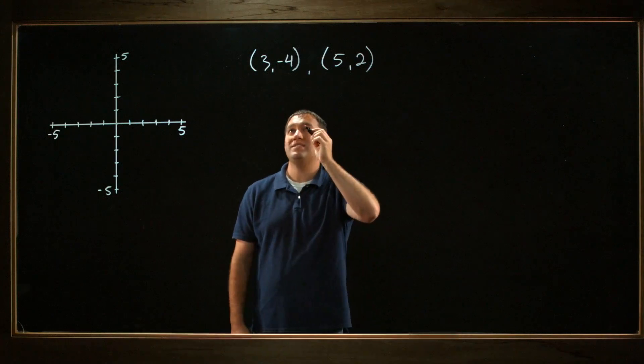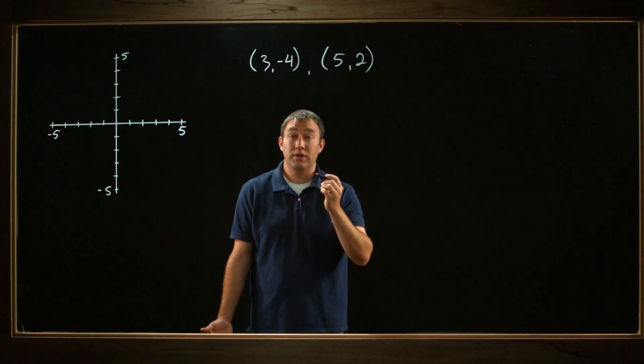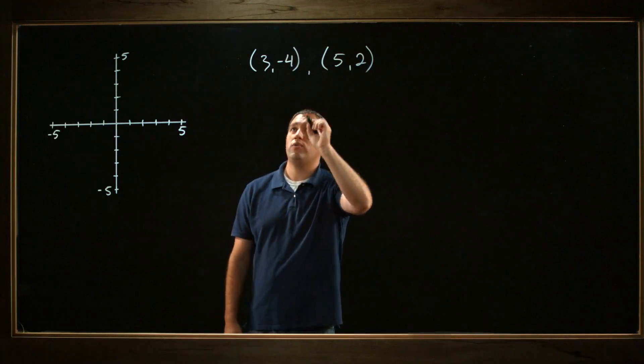Well, in this case, it's probably easiest just to plot the two points and look at the line that connects them. So let's plot the point (3, -4).